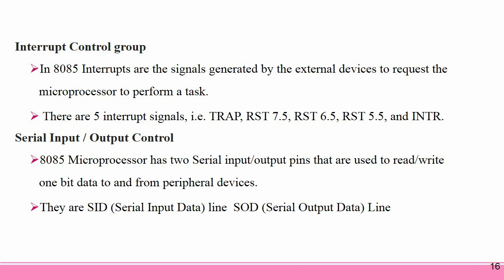Serial Input and Output Control: The 8085 microprocessor has 2 serial input and output pins used to read or write 1-bit data to and from a peripheral device. They are SID (Serial Input Data Line) and SOD (Serial Output Data Line).